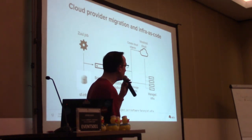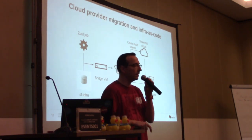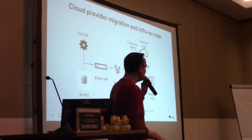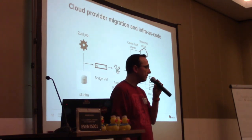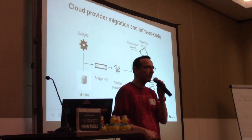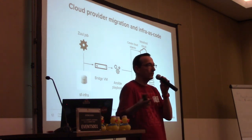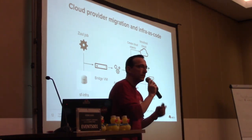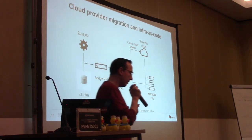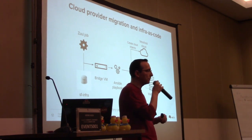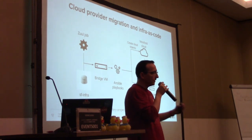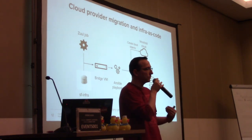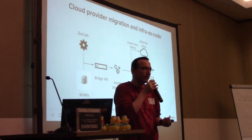Until recently, we were running all our infrastructure internally in a cloud called RDO Cloud, managed by Red Hat employees and based on RDO Ocata. The hardware was aging and the team was having trouble maintaining the infrastructure, so we decided to migrate to a new provider. We now have a cloud provider, Vexxhost, providing us with a test cloud, and we are using that cloud to host our infra. We're still in the process of migrating, but we decided to bite the bullet and go full DevOps.